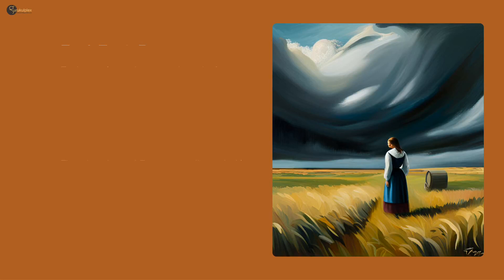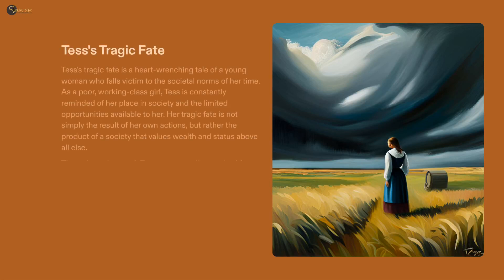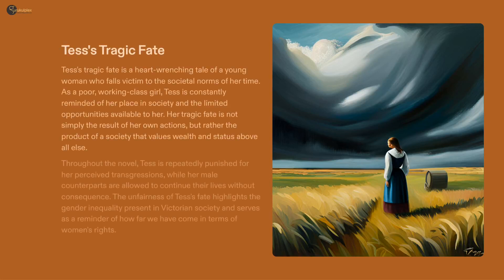The novel gives an insight into the unfortunate destiny of its protagonist, Tess. Throughout the book, Tess is presented as an innocent sufferer of the rigid norms and lack of possibilities in society. Her tragedy wasn't only a consequence of her decisions but also of the constrictions that society had imposed on her as a financially poor working-class female. Her ultimate fate brings out the inequality between men and women that had existed in Victorian society, serving as a reminder of our advances in women's rights.